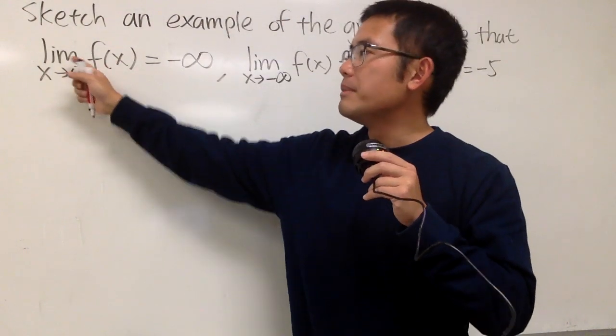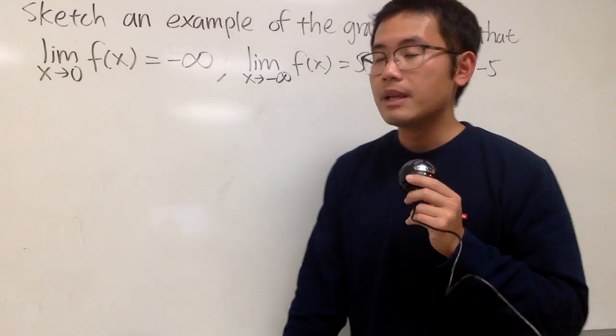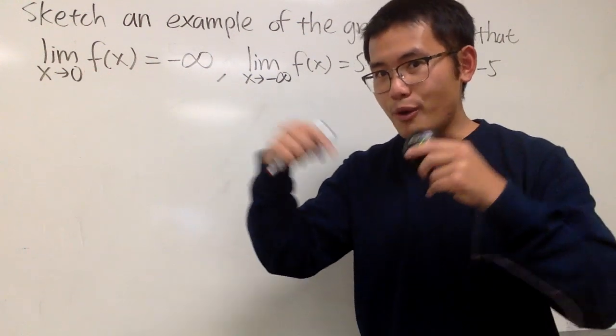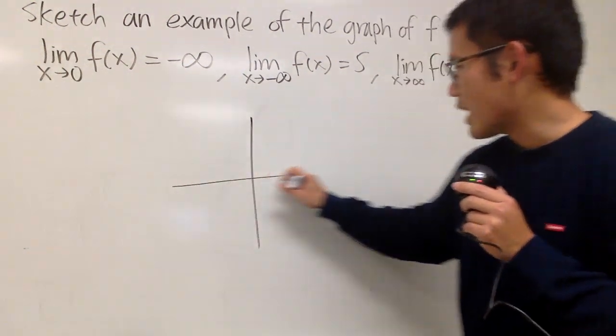Let's look at the first one. We have the limit as x approaching 0 of the function to be negative infinity. This doesn't have plus or minus, that means both directions. So let's go ahead and come up with the graph along the way.